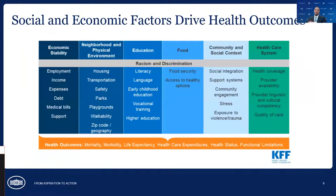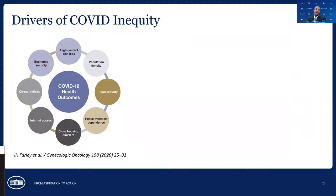We arrived at the themes we always arrive at when we talk about equity: social and economic factors drive health outcomes. The six domains — physical environment, education, food, community and social context, healthcare system, and the cross-cutting impact of racism and discrimination — are drivers of health outcomes in general, and they're no different as drivers of COVID inequity as well. A 2020 paper thought about the disproportionality we saw in cases, hospitalizations, and deaths, and what was driving it.